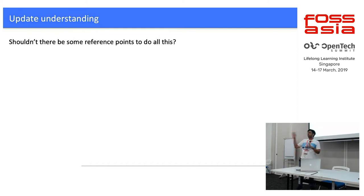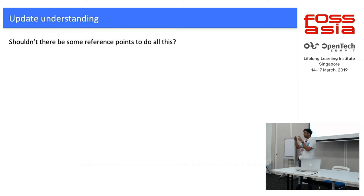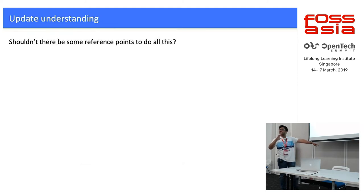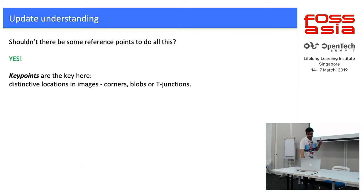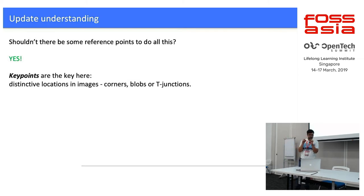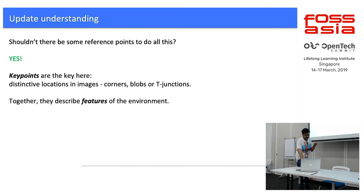Before beginning an AR experience, you need some reference points — so you scan your room and identify fixed points. When you turn, you should see some fixed points to identify that a rotation has happened. For this, you use key points, which are distinctive points in an image. They help keep track of what things are constant. They're called features in this environment, also called trackables — stored in a database and used for further comparison.